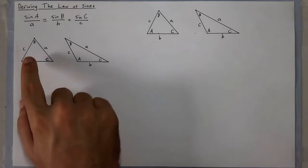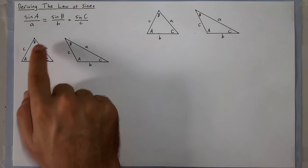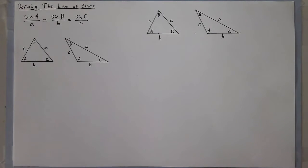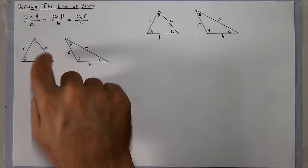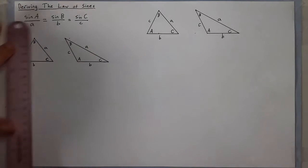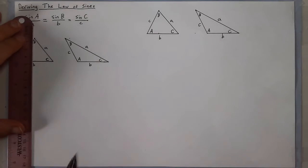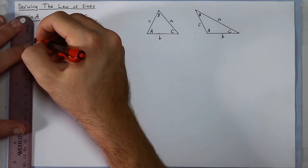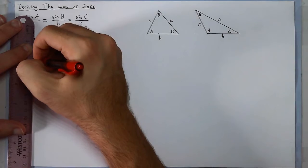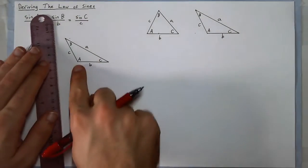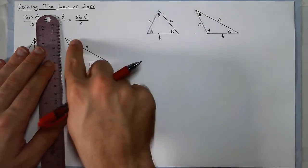This is for a triangle labeled with side a being opposite its angle A, side b being opposite its angle B, and side c being opposite its angle C. The reason I drew two triangles is one has three acute angles, while the other has one obtuse angle and two acute angles.